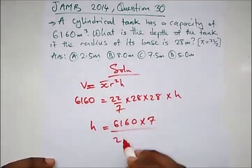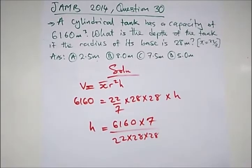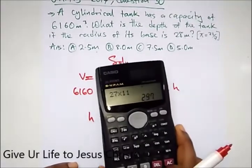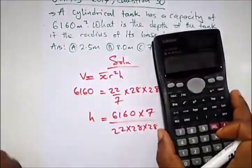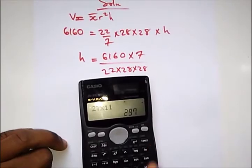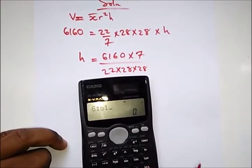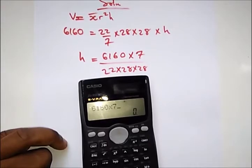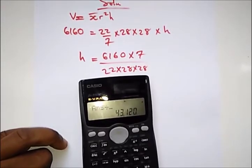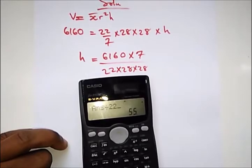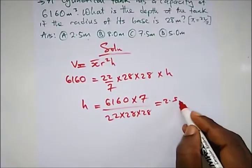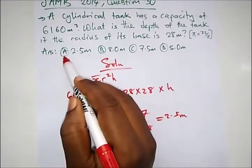We can cancel out and use a calculator. So we punch in 6160 times 7, divided by 28, divided by 28 again, and divided by 22, which gives us 2.5 meters. So our correct option is option A.